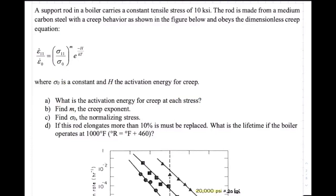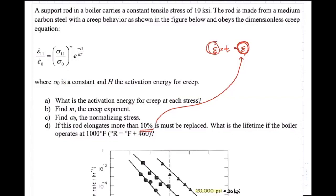We also have to find M, which is the creep exponent, find sigma naught, and calculate the lifetime if the rod elongates more than 10%. That means we calculate the creep strain rate, multiply by time to get the total strain, and use 10% as the reference. So given the maximum strain and the strain rate, we can find T. This is the basic procedure to solve this problem.